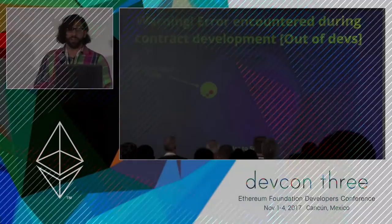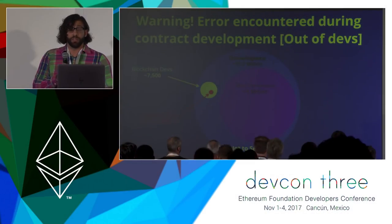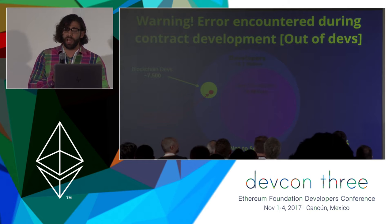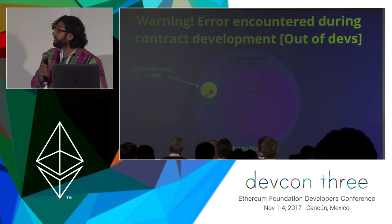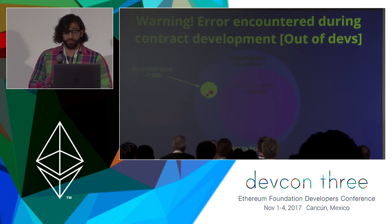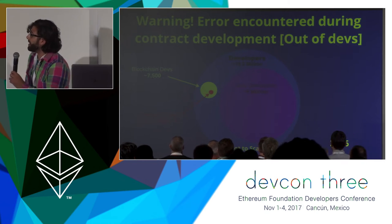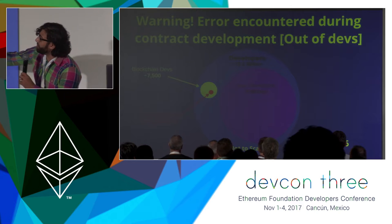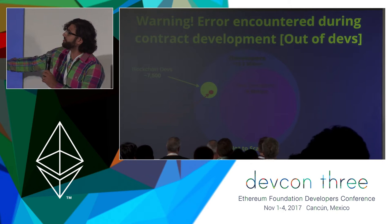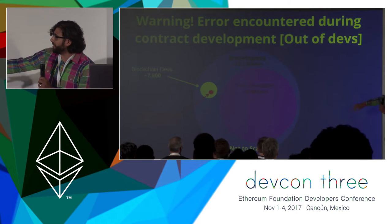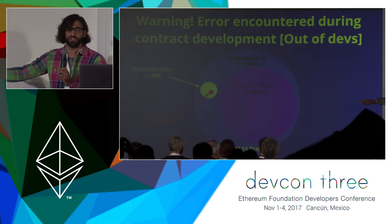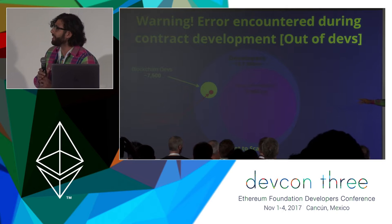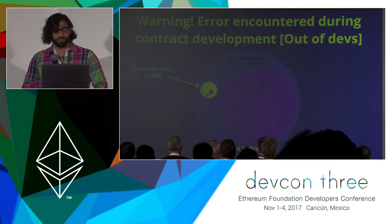How many smart contract developers are there? The answer is not enough. We're mirroring a similar situation that happened in the early days of web development in the 1990s. We have high demand, low supply. Right now we have around 9 million Java developers, and that's paled in comparison to the less than 10,000 blockchain developers, and even less smart contract developers.